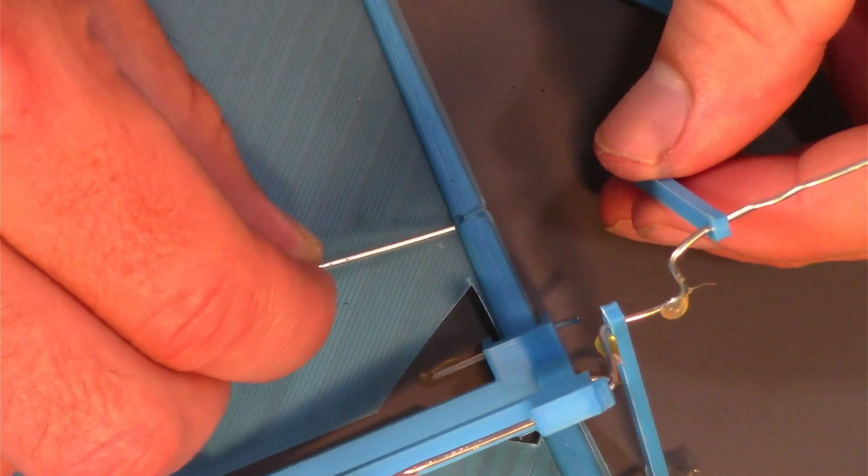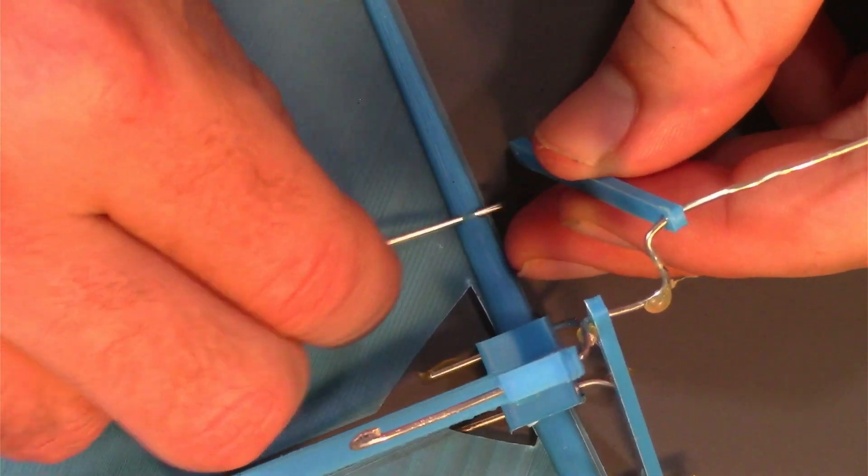Something that helped me out this time was hot gluing the ends of the paper clips to stop the ornithopter from falling apart.